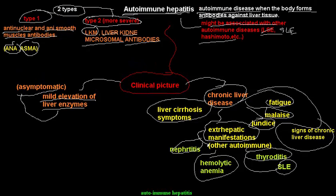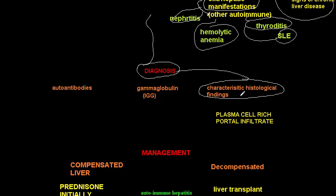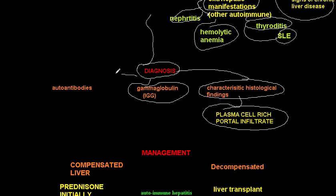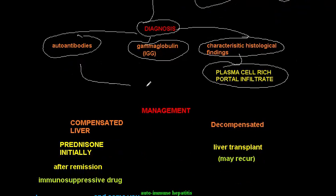Diagnosis is mostly by characteristic histological findings on liver biopsy — plasma cell-rich portal infiltrates. This is associated with elevated gamma globulin and the presence of auto-antibodies: anti-smooth muscle antibodies, anti-nuclear antibodies, or anti-liver-kidney microsomal antibodies.